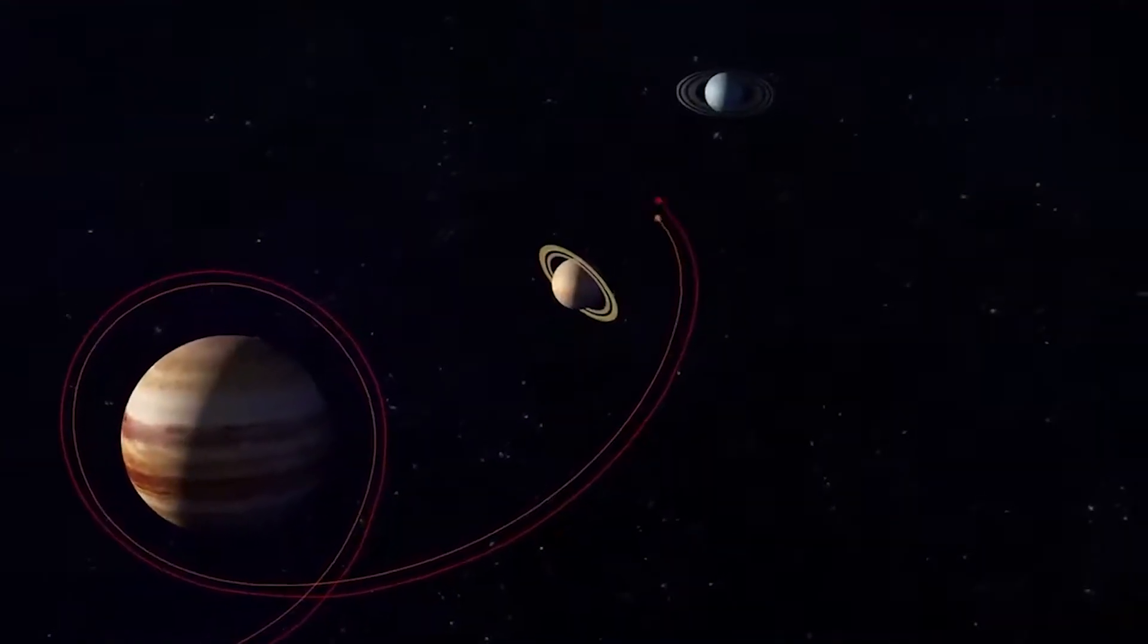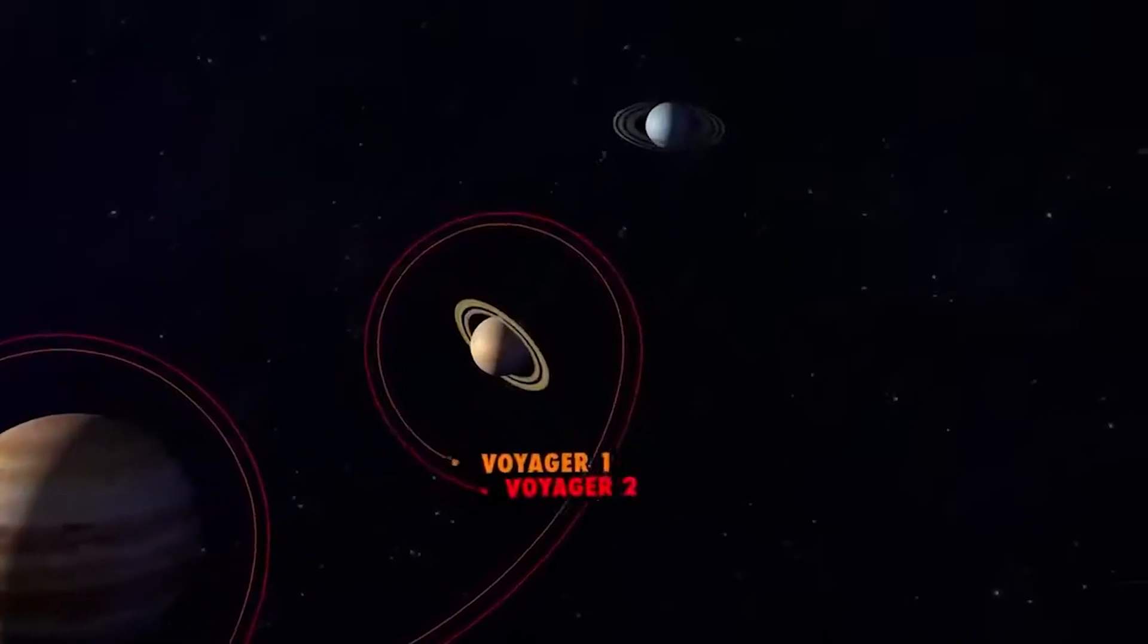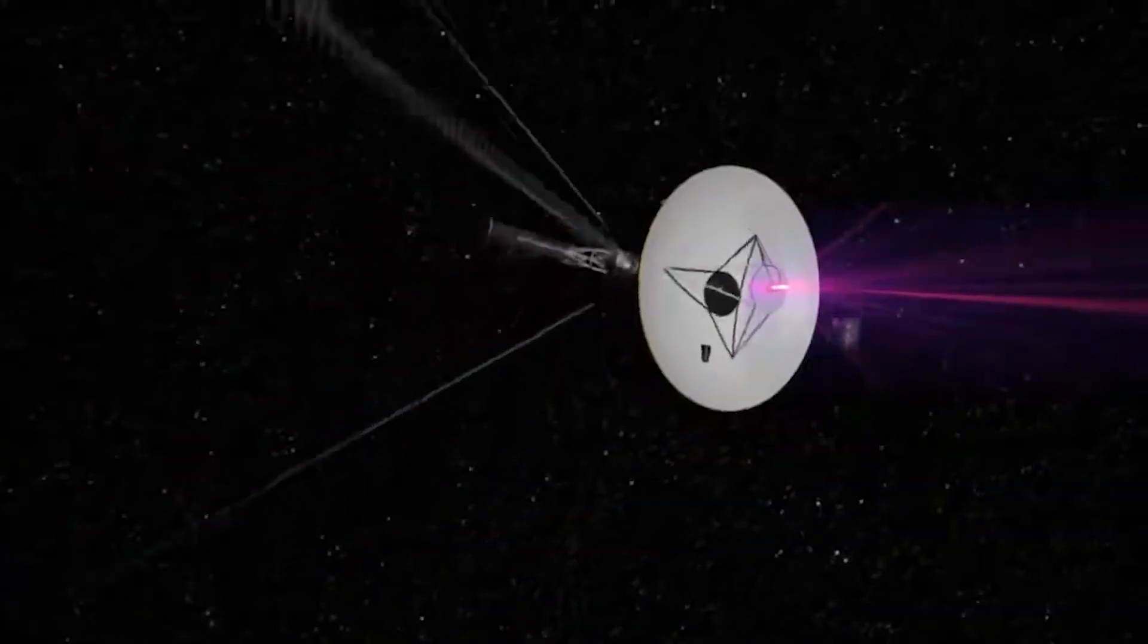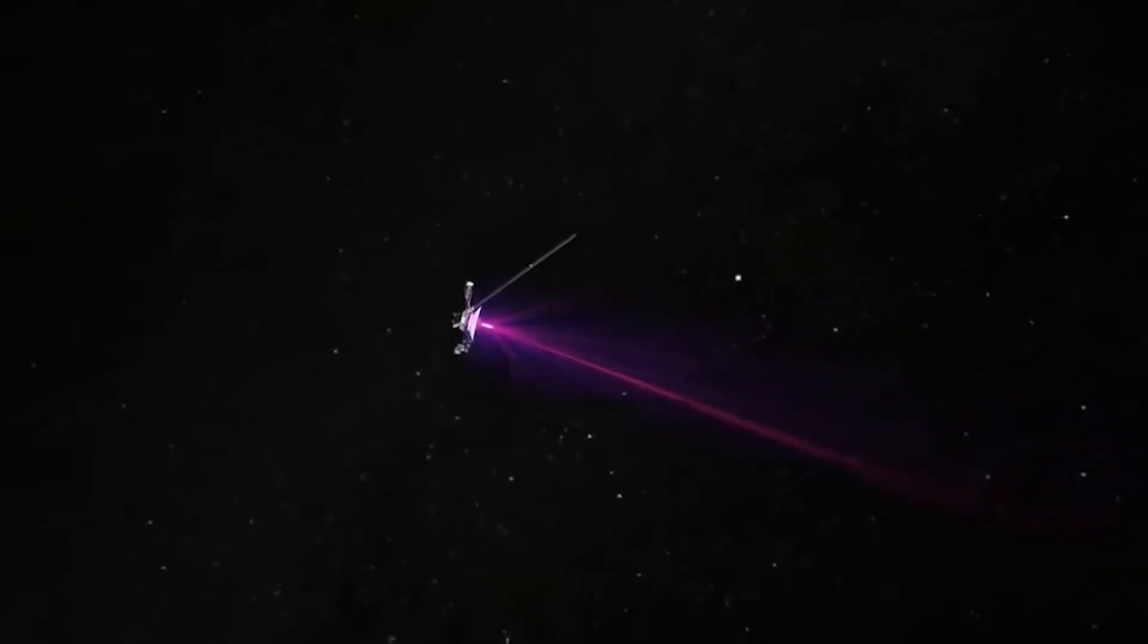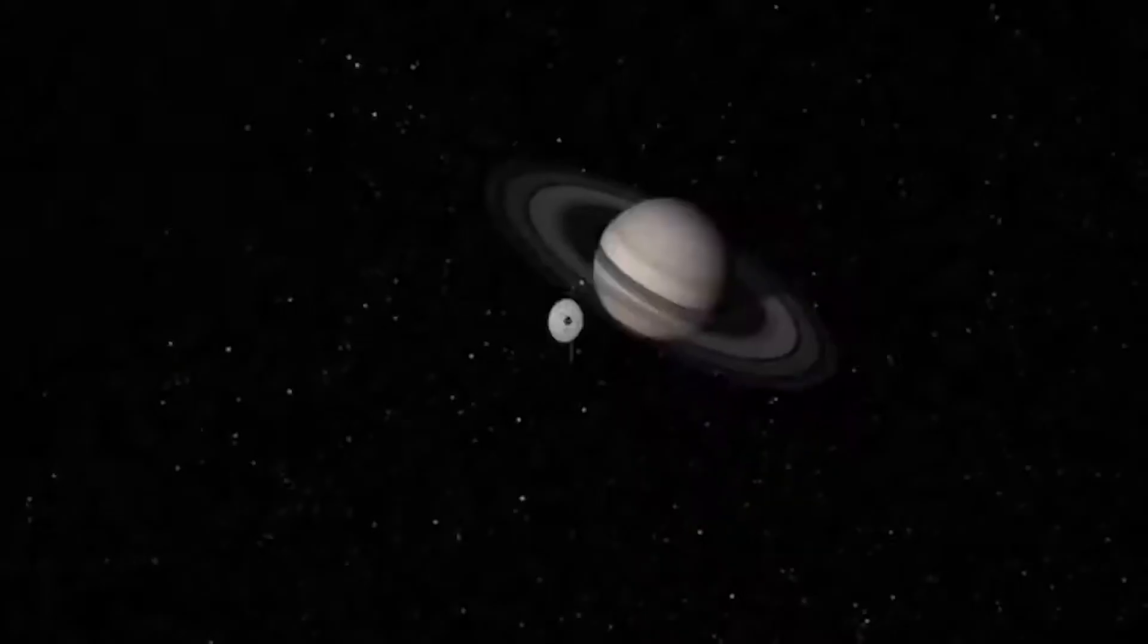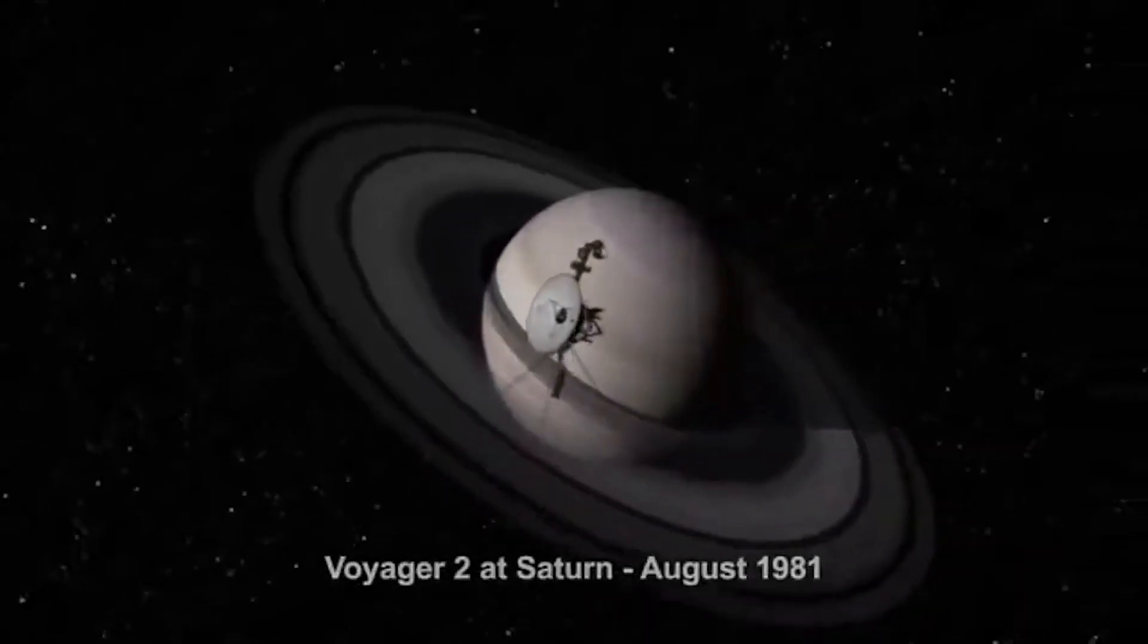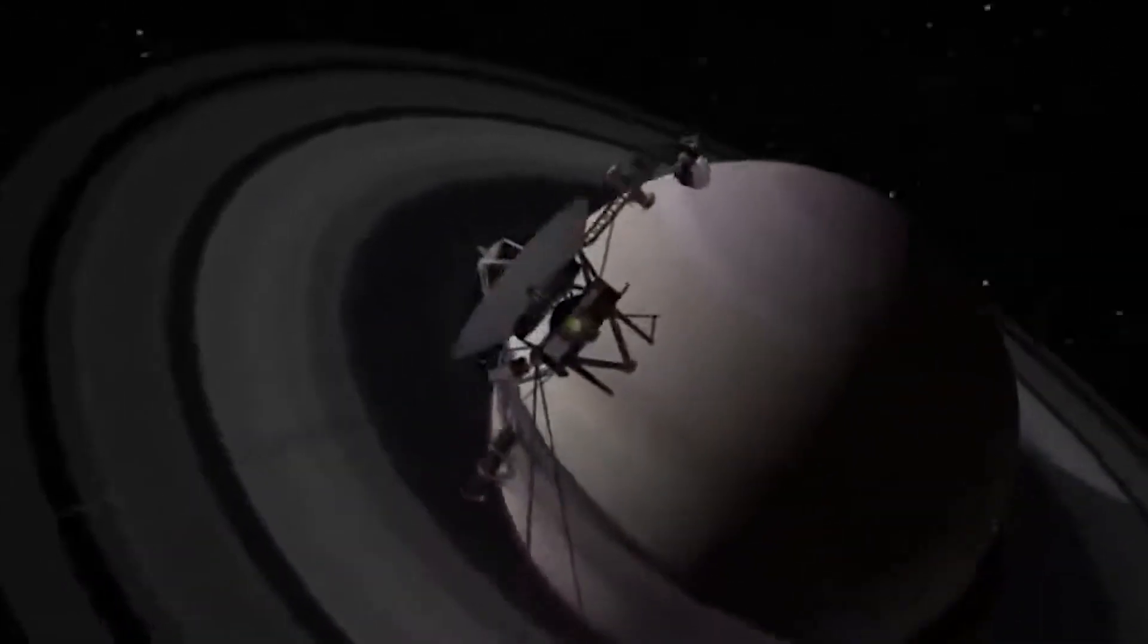With the termination of Voyager 1 ultraviolet spectrometer, its plasma subsystem, its scan platform, and ultraviolet spectrometer observations, data tape recorder, gyroscopic operations, as well as the termination of Voyager 2's scan platform and UVS operations, DTR operations, and CRS heater powered down.